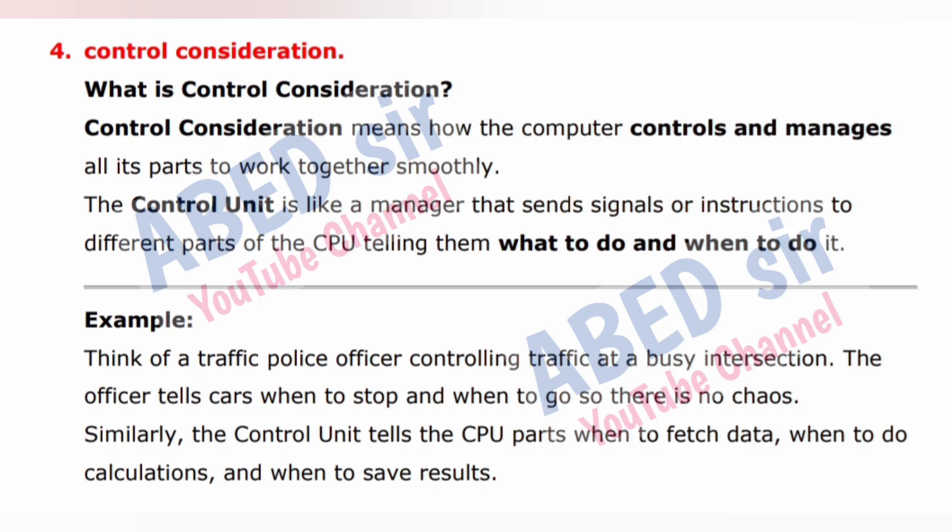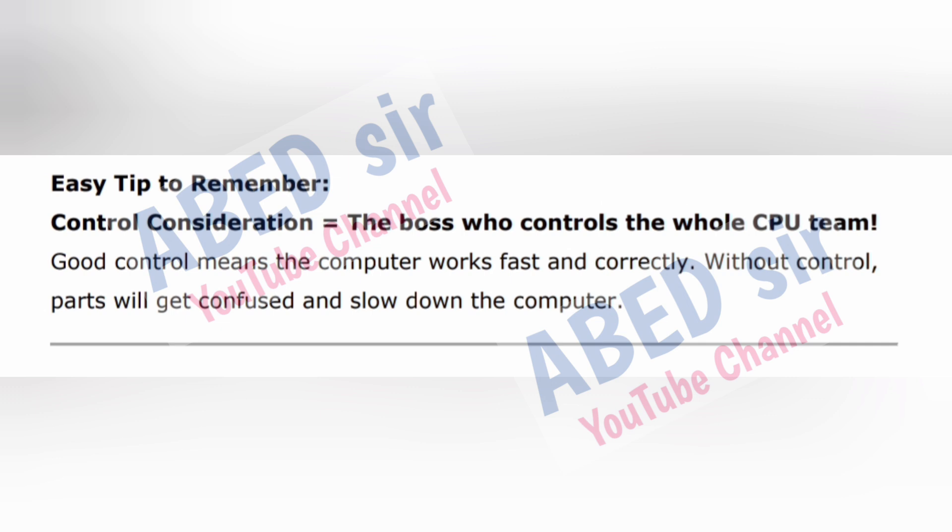Next important short question is 4: What is Control Consideration? Control consideration means how the computer controls and manages all its parts to work together smoothly. The control unit is like a manager that sends signals or instructions to different parts of the CPU, telling them what to do and when to do it. Example: Think of a traffic police officer controlling traffic at a busy intersection — the officer tells cars when to stop and when to go. Similarly, the control unit tells the CPU parts when to fetch data, when to do calculations, and when to save results. Easy tip: Control consideration = the boss who controls the whole CPU team. Good control means the computer works fast and correctly.